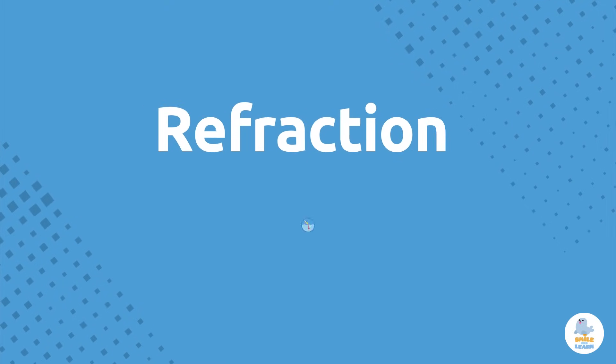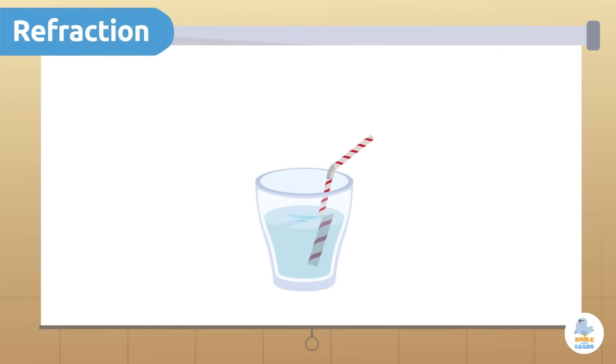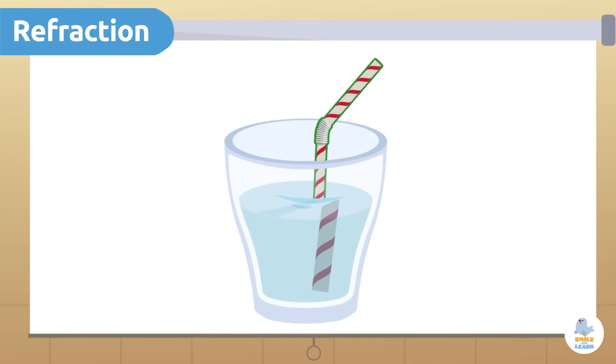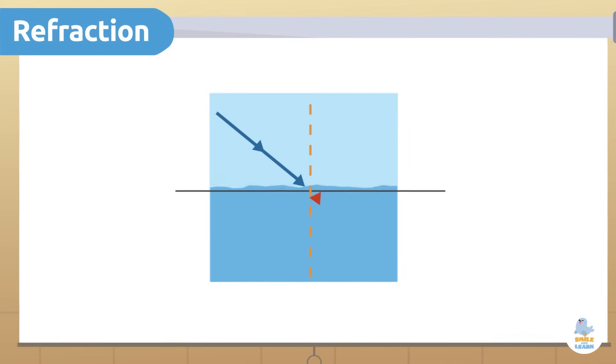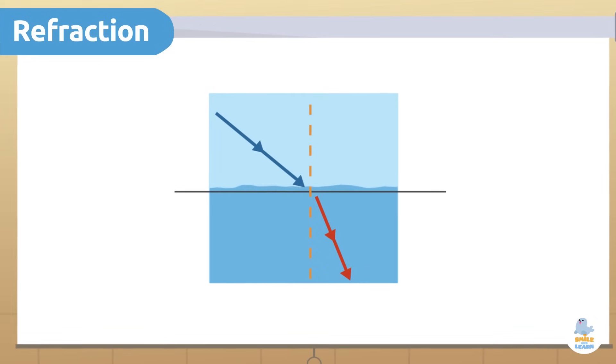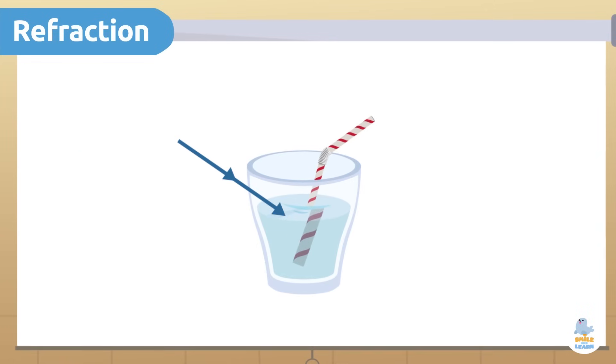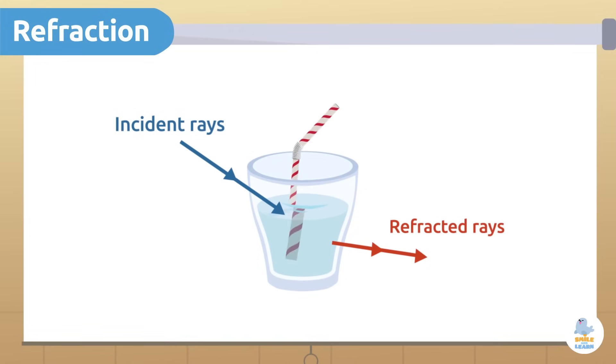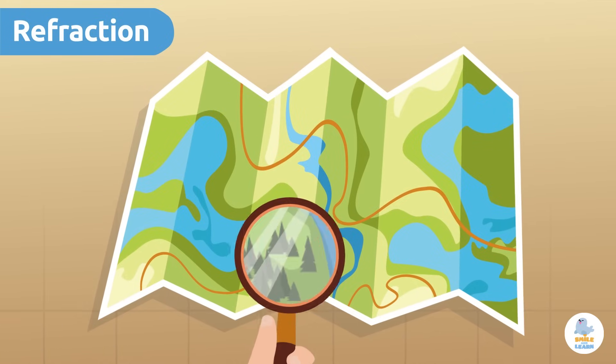Now let's look at another property of light: refraction. Have you ever wondered why when you put a straw in a glass of water we see it differently than when it is outside water? This happens because of refraction. When light rays pass from one medium to another, for example from air to water, they change their speed and direction. This is how refraction happens. The light rays that reach an object are called incident rays and the light rays that change their trajectory or velocity are called refracted rays.